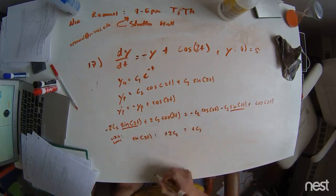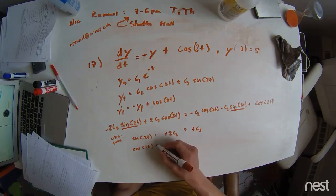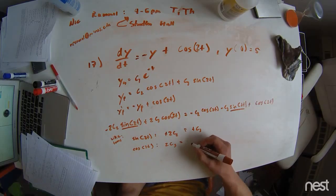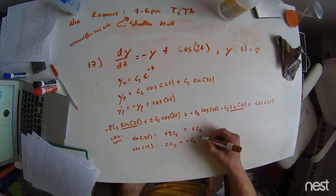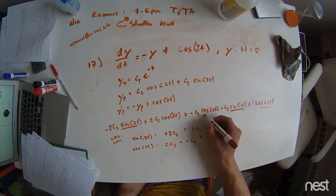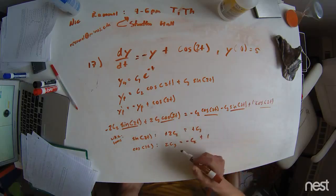We have our sine of 2t terms. So we have negative 2c2 equals negative c3. We can make those positives, so that looks a little nicer for us. Now, we're going to look at our cosine of 2t terms. And we get 2c3 equals negative c2 plus 1. There's a 1 right there. Alright, now we have to substitute in.